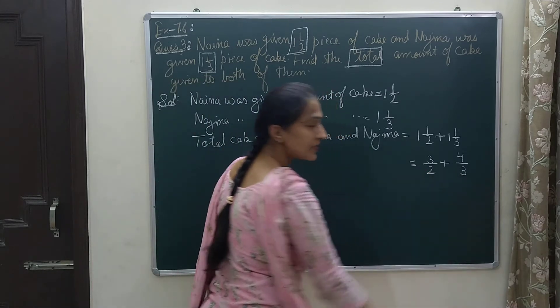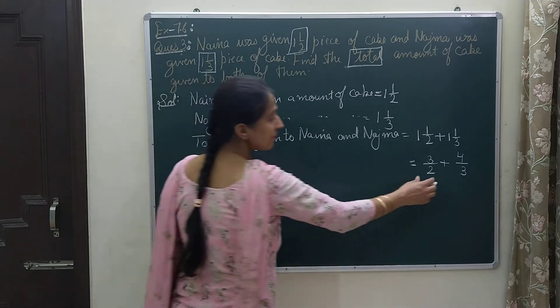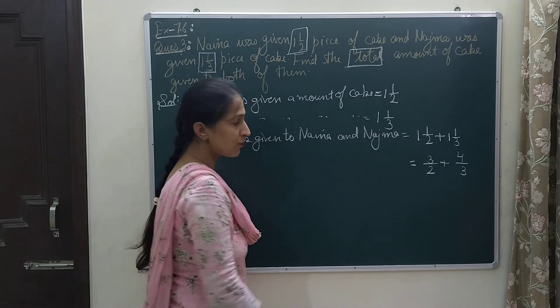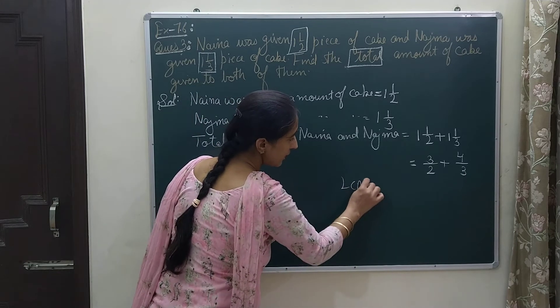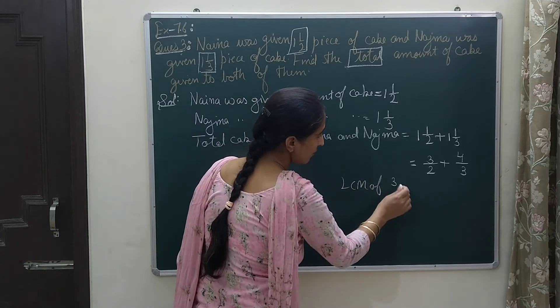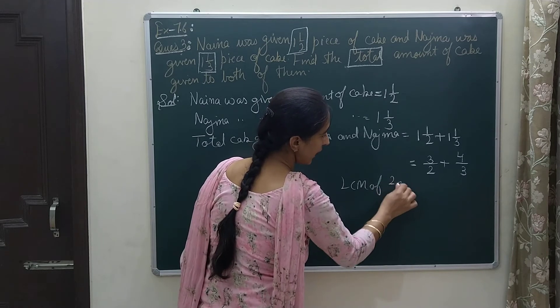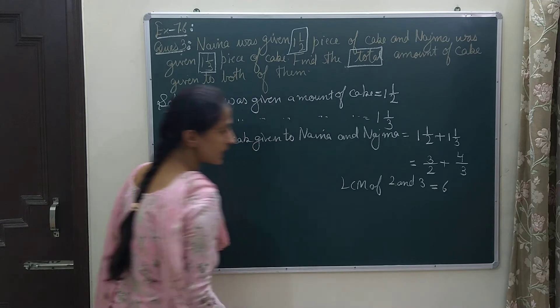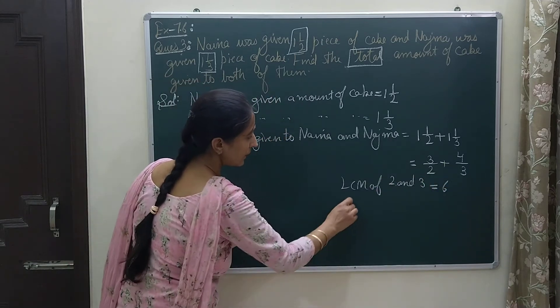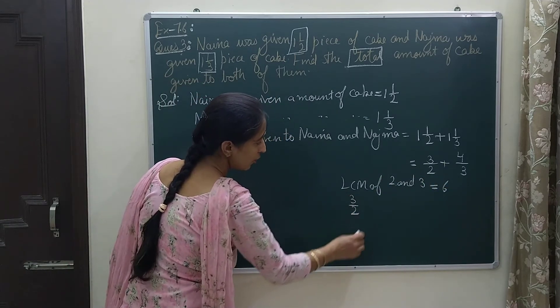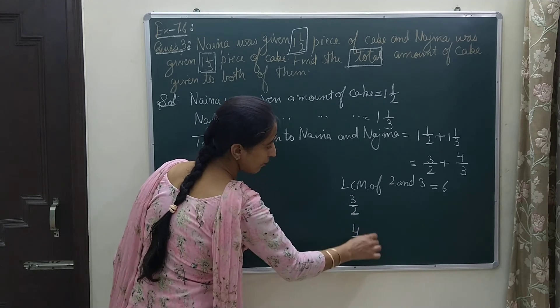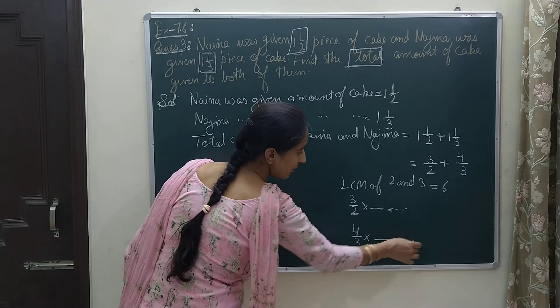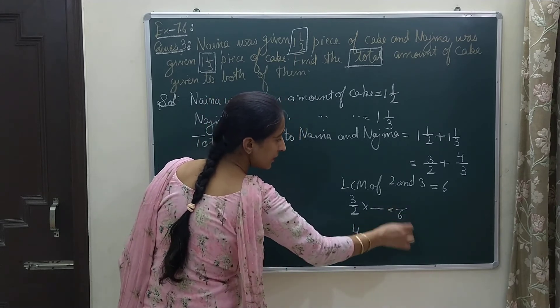These two fractions are converted into improper ones now. But here denominators are not same. So we will find the LCM so that we can turn denominators into equal ones. Now LCM of 2 and 3, both the denominators, and that is 6. Now we will turn this 3/2 and 4/3 into equal fractions with denominators 6.